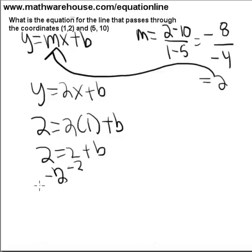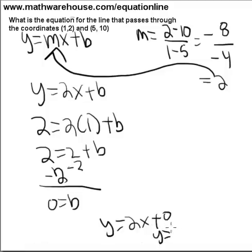And this is going to simplify to 2 equals 2 plus b. And, as you can see, b is going to be 0. So, our final equation is y equals 2x plus 0 or just y equals 2x.